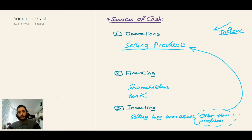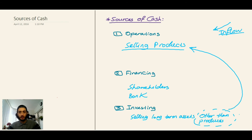So this is the inflow of cash. For example, if we got a loan from BMO — Bank of Montreal — for one thousand dollars, which category would this inflow of cash be? Yes, it would be the financing category.